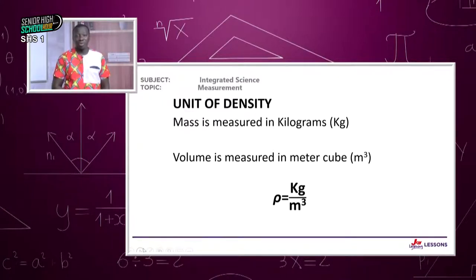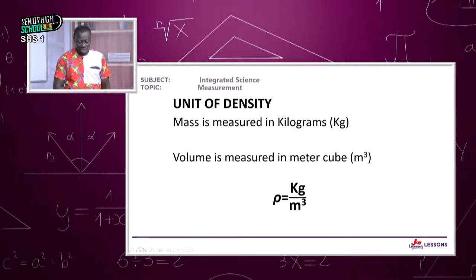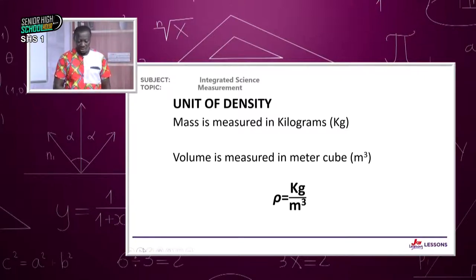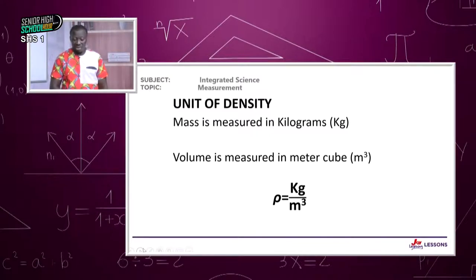When you come out with a measurement, you also have to look at the unit. The SI unit for mass is kilograms, represented by kg. The volume is measured in meter cube. So the density, which is mass over volume, will have the unit of kilogram divided by meter cube.